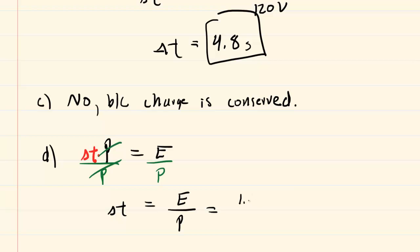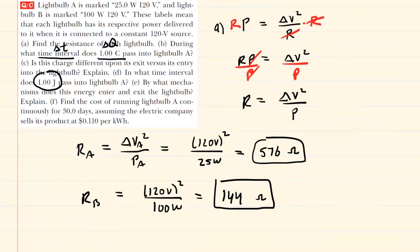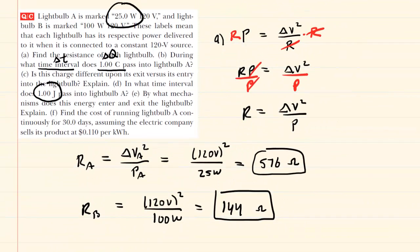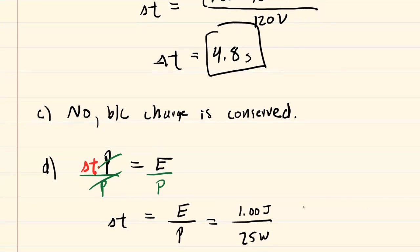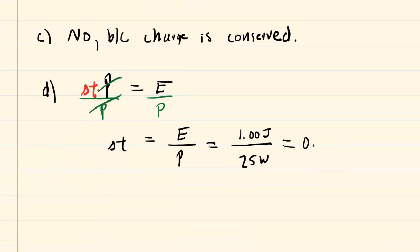The energy was given as one joule. And then the power for lightbulb A was 25 watts. Let's just double check that. There it is right there for lightbulb A. So we'll divide these. And when we do so, we get 0.04 seconds. And that would be the correct answer to part D.